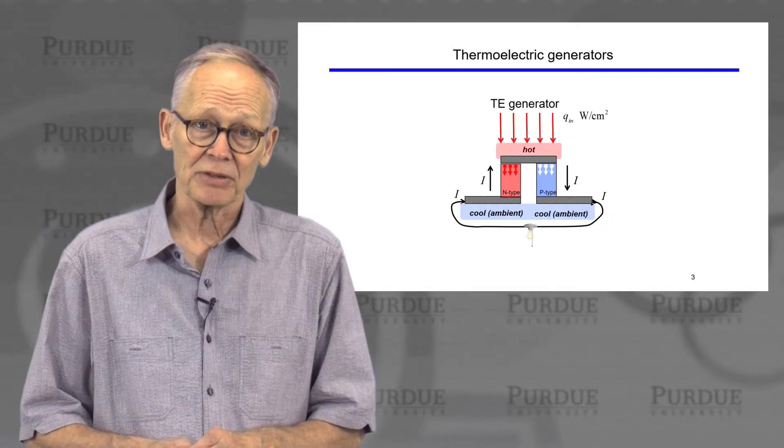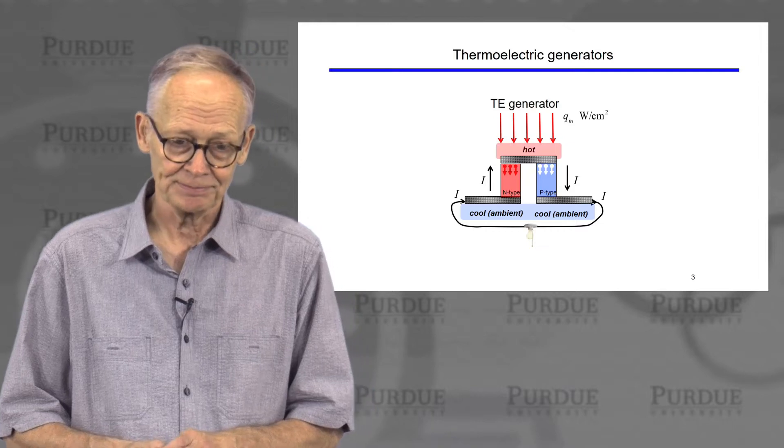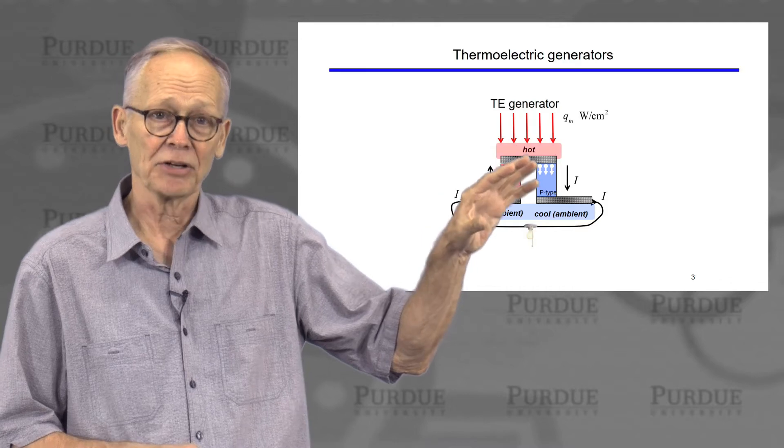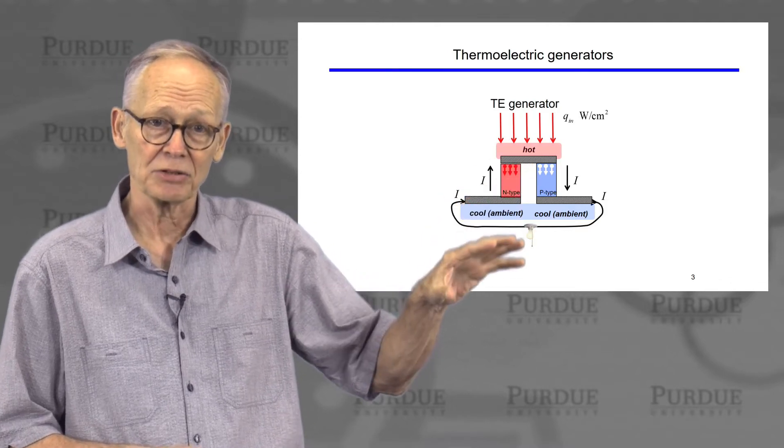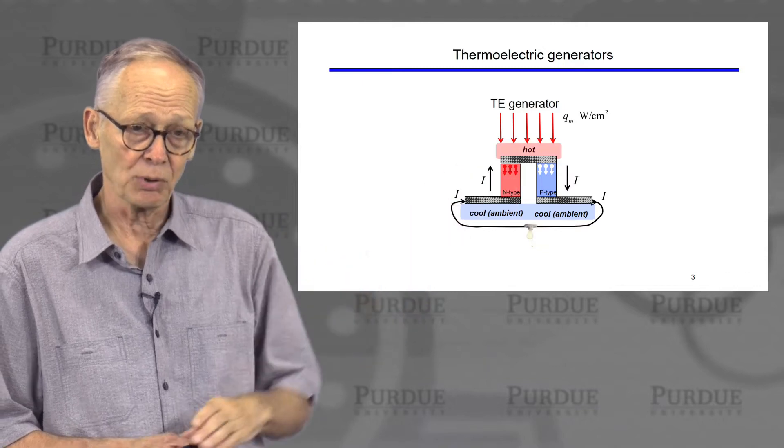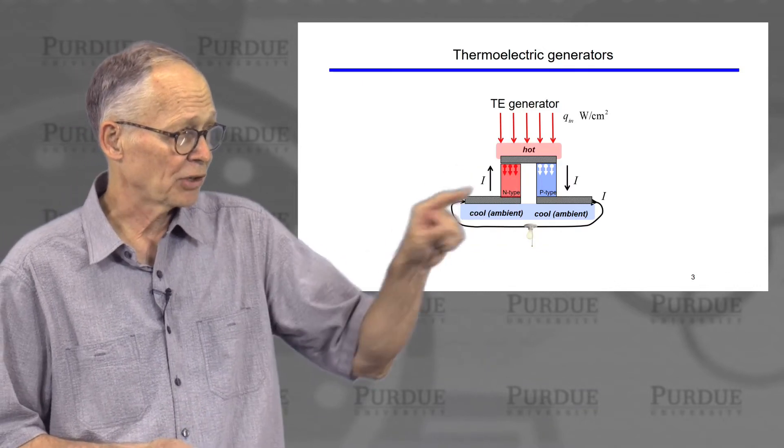Another application would be a thermoelectric generator. If we apply heat on the top, the carriers will diffuse away from the heat, towards the cooler end on the bottom. When electrons and holes both diffuse down, we have a current flow.